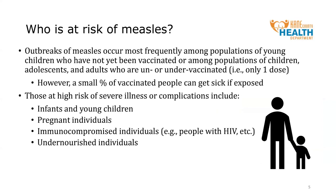Now let's discuss groups who are at greater risk of measles infection and complications. When measles outbreaks occur, they most commonly occur among populations of unvaccinated or under-vaccinated individuals — for example, among young children who have not yet been vaccinated, among adults who have only received one dose of the vaccine, or among a combination of children and adults who are under- or unvaccinated. However, a small percentage of vaccinated people can get sick if exposed to measles. Individuals at greater risk of severe measles symptoms and complications include infants and young children, pregnant individuals, individuals who are immunocompromised such as people with HIV, cancer, or other immunosuppressing conditions, and undernourished individuals.